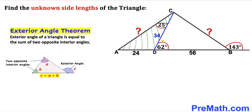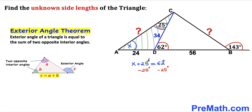In our case, this 62 degree angle is our exterior angle and these are our two opposite interior angles. Let's call this unknown angle X. Then according to this theorem, X plus 25 must be equal to 62 degrees. Subtracting 25 degrees from both sides, our angle X turns out to be 37 degrees.